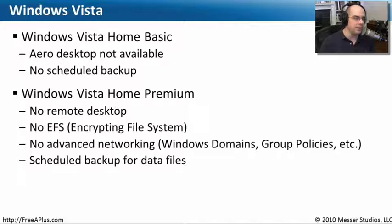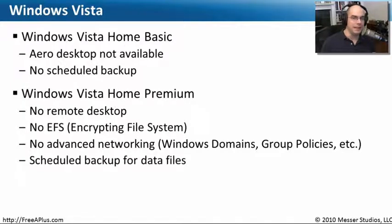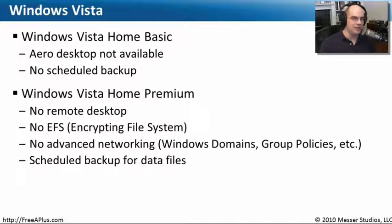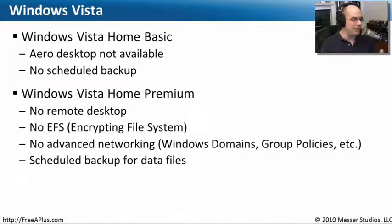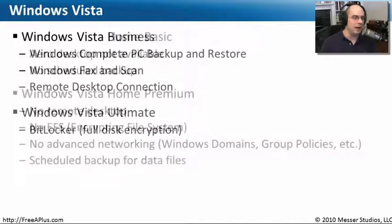When people buy a computer for home use, most often they're getting something like Windows Vista Home Premium. It gives you the ability to have the Aero desktop and a scheduled backup function, but it doesn't have some of the things you see in an enterprise environment. There's no remote desktop built in, no encrypting file system, and no way to get on a Windows domain and have group policies assigned to the machine. Microsoft can charge a little less because home users will never need support for group policies or the encrypting file system — that's the balance they make when putting together these operating systems.